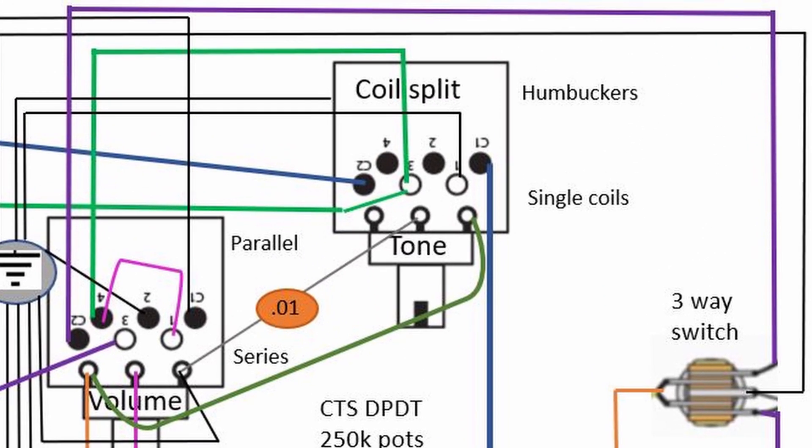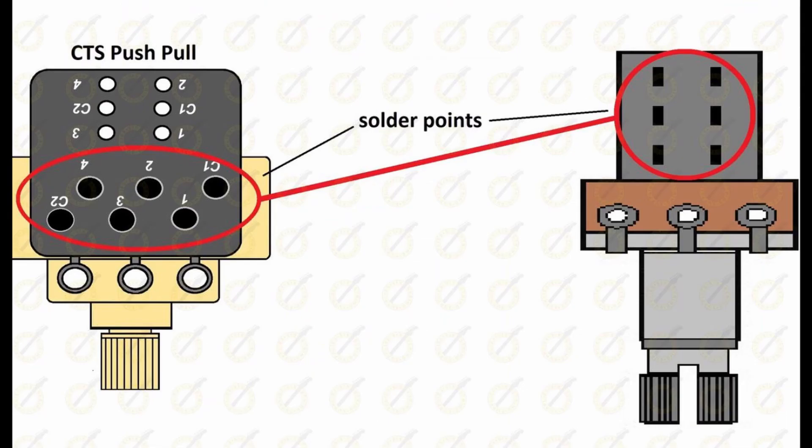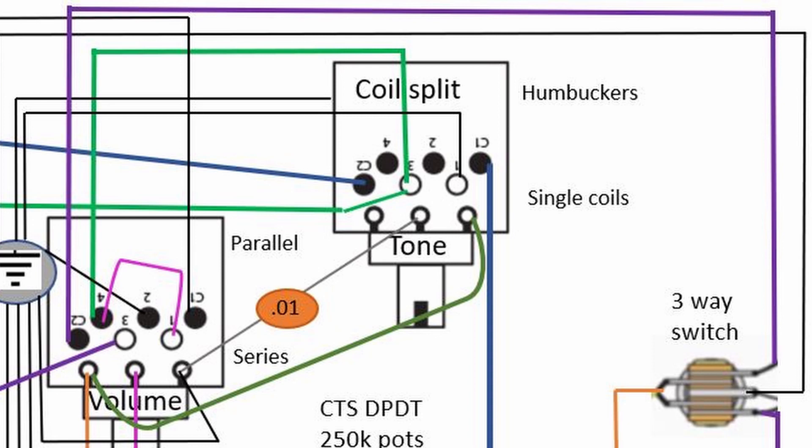Okay, so if we move up to the coil split, this is a CTS pot. This is what that diagram looks like compared to the sort of alpha push-pull pots or DPDT switches. It's slightly different, but basically the two and the four are the bottom two lugs, and the one and the three are the top, and C2 and C1 are the common, so they're always engaged. And basically how this works is you can see that the north finish and south finish of each of the humbuckers are connected on either side to C2 and C1.